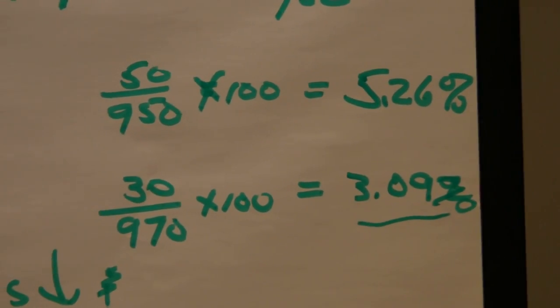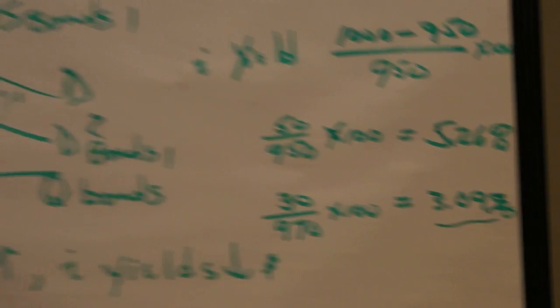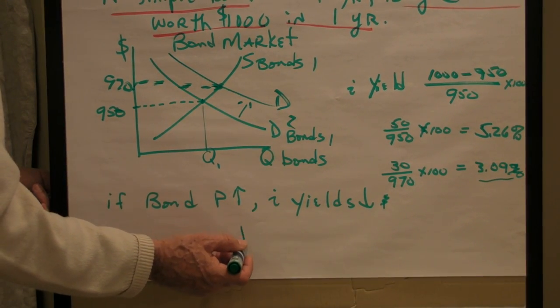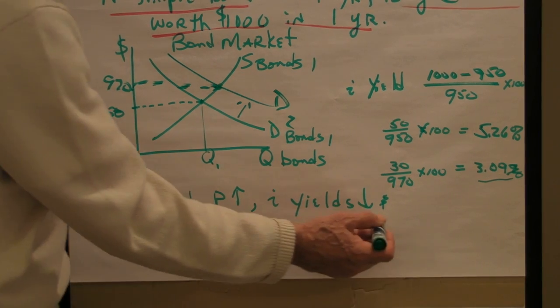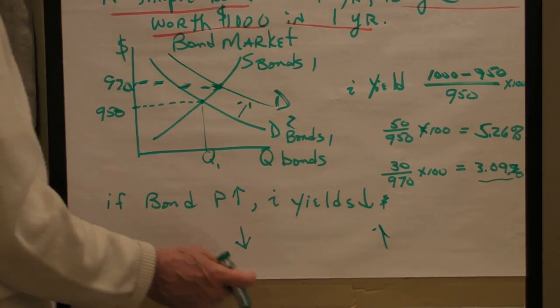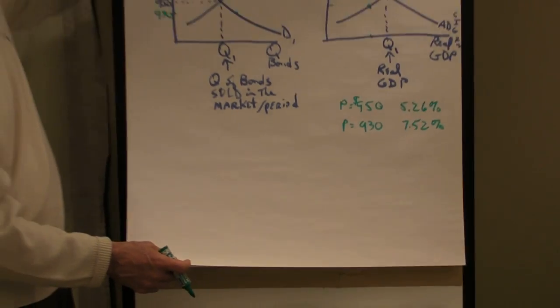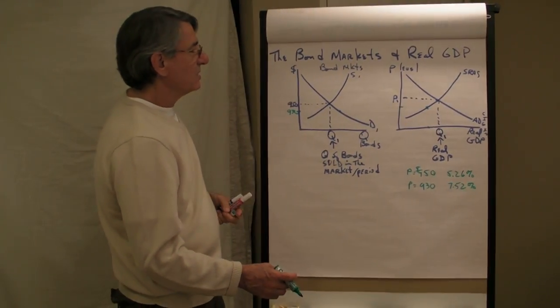So in this case, if the bond price goes up, the interest rate yield goes down. And if the bond prices were to go down, the interest rate yield on it would go up. That's the inverse nature of bond prices and bond yields.